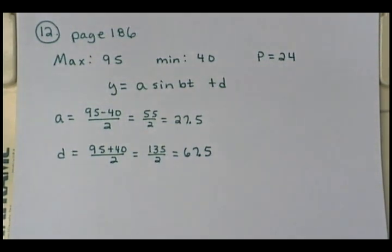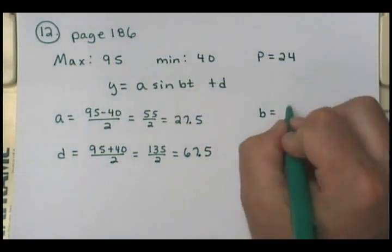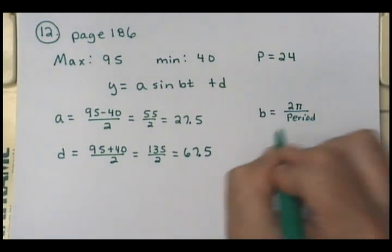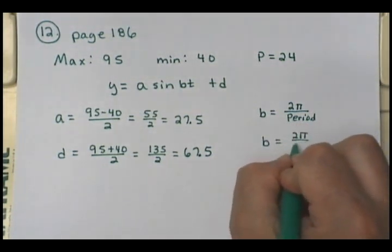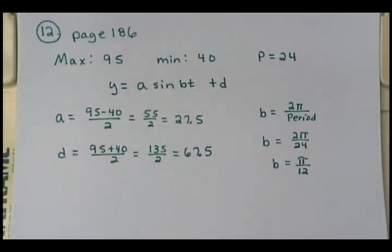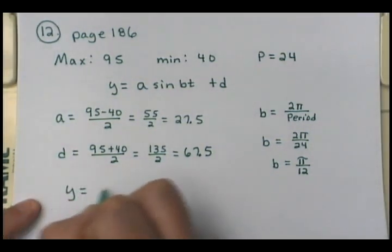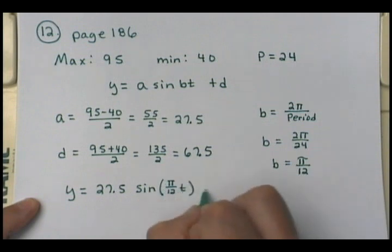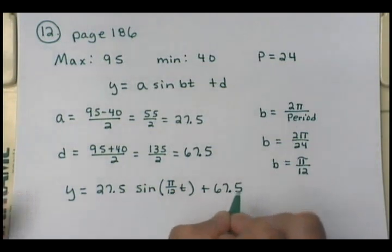If my period is 24, we know that b equals 2π divided by the period, so b would be 2π over 24, which simplifies to π/12. So my sinusoidal equation would be 27.5 times the sine of (π/12)t, plus 67.5.